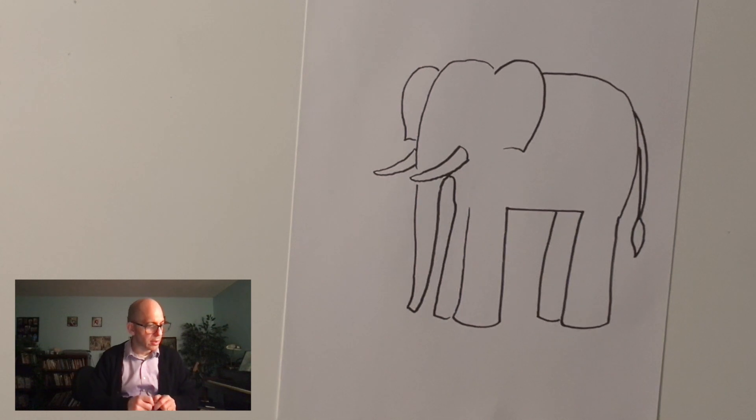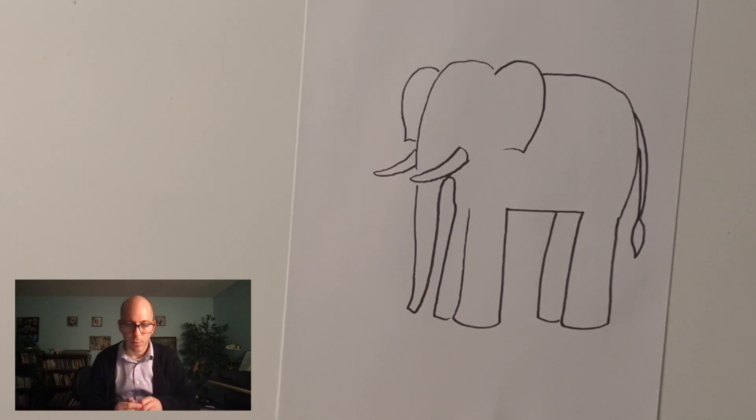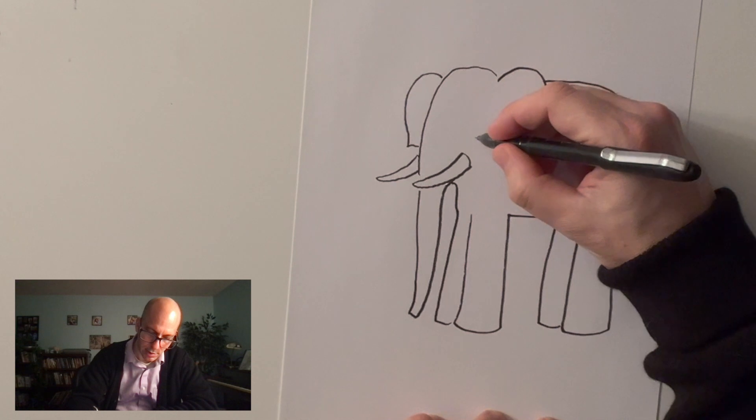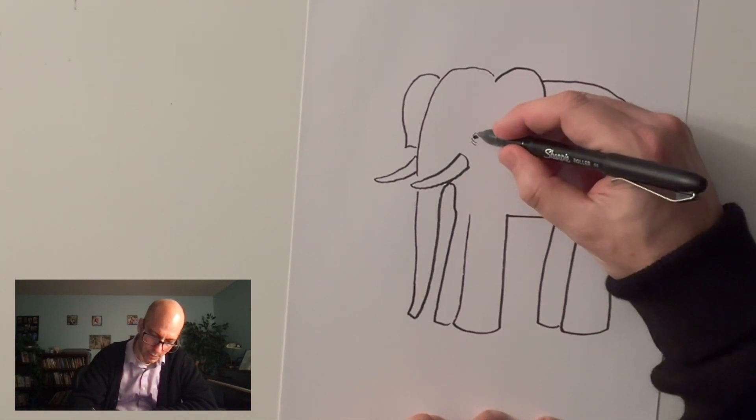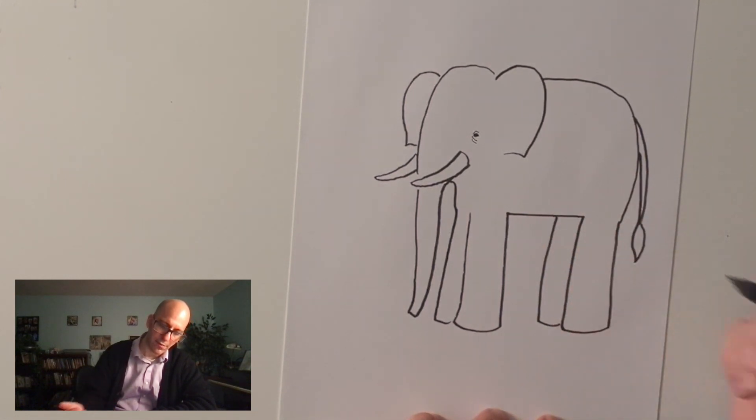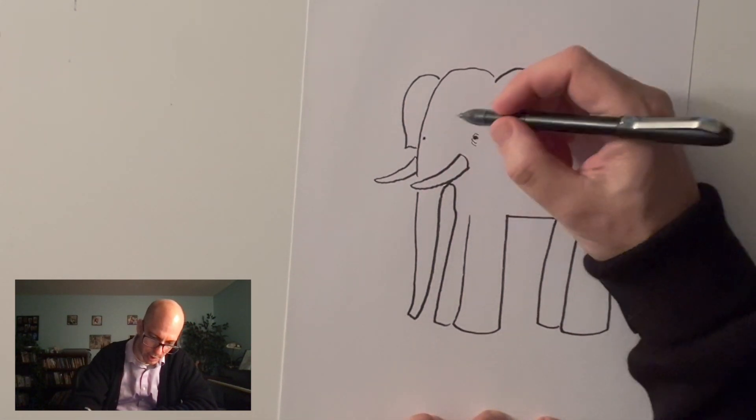Now, there's a couple details we can add. Elephants tend to have kind of teeny eyes, something like this. Really tiny. And they've got really wrinkled skin, so you can put stuff around it like that. And that's a pretty good way to make an elephant eye.